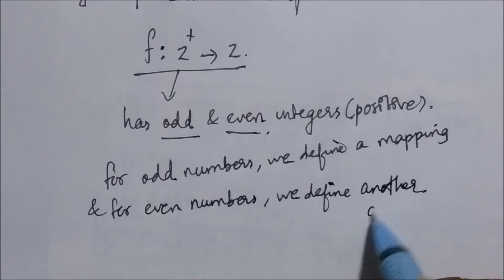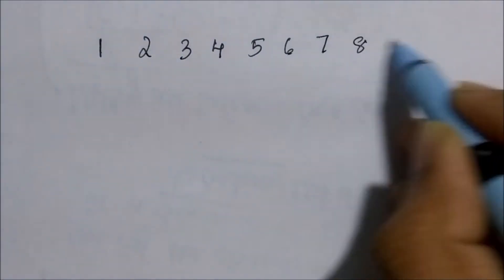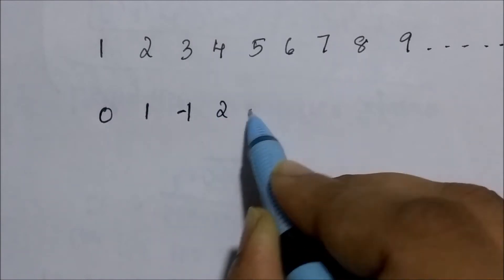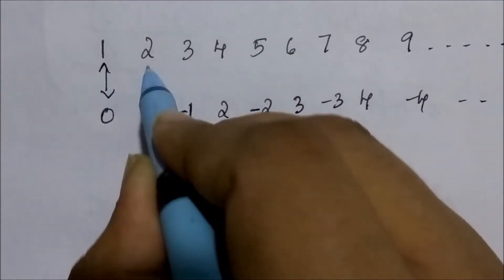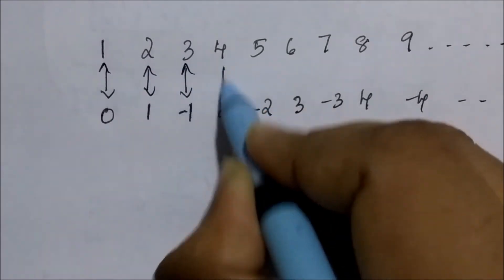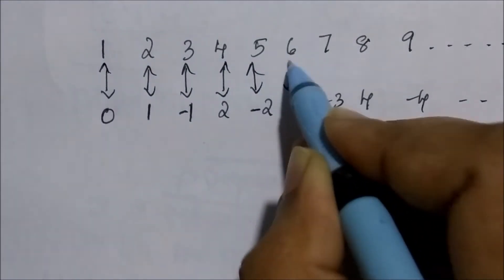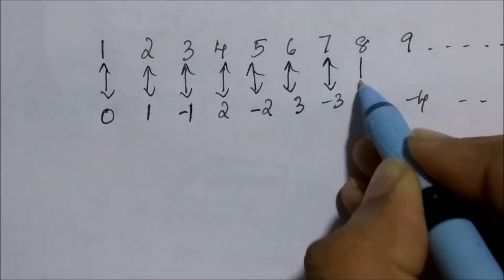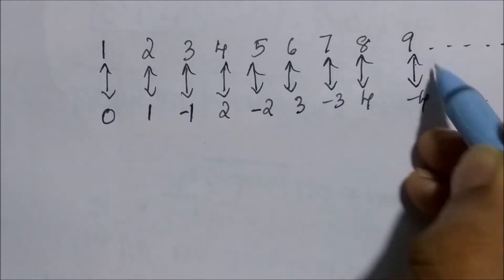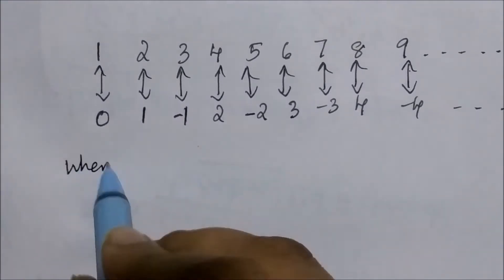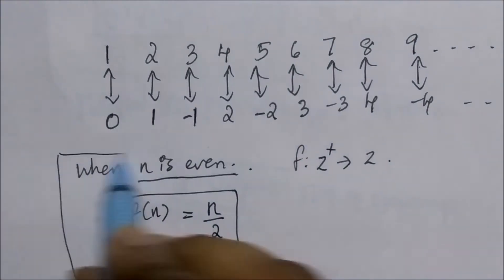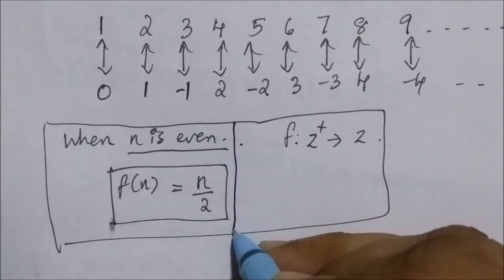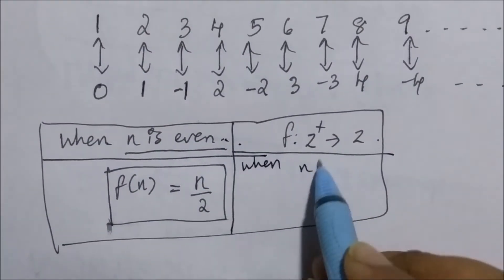As we mentioned before, when we write the sequence 0, 1, -1, 2, -2, and so on, the mapping goes this way: 1 is mapped to 0, 2 is mapped to 1, 3 is mapped to -1, 4 is mapped to 2, and so on. Now we see how we write the function for it. The bijection is defined as follows: when n is even, f(n) = n/2, where f is from the set of positive integers to the set of integers. And when n is odd, f(n) = -(n-1)/2.